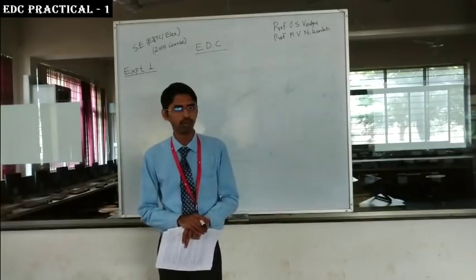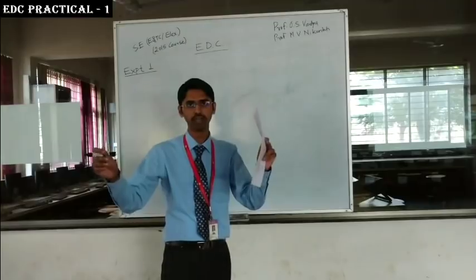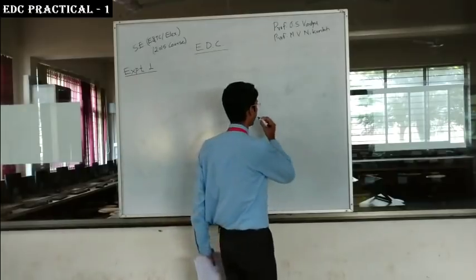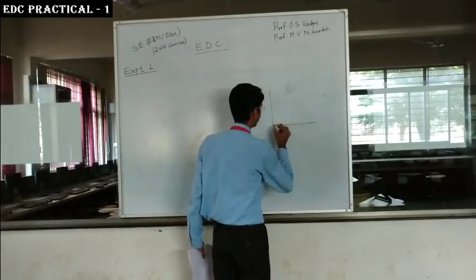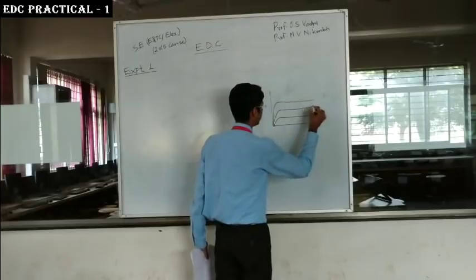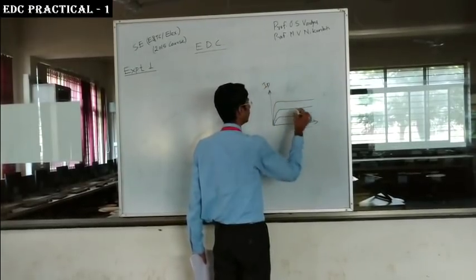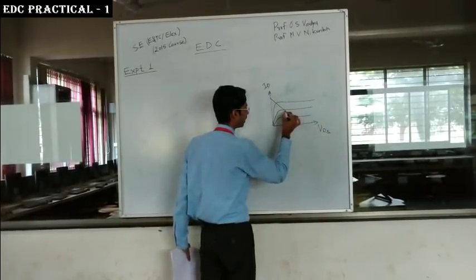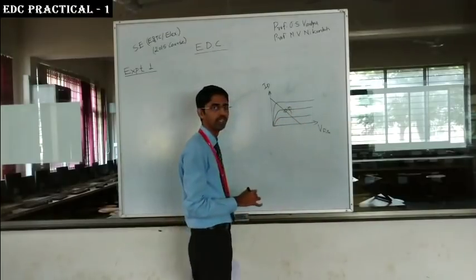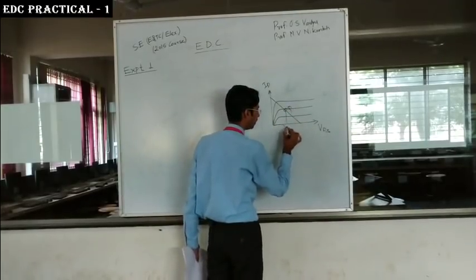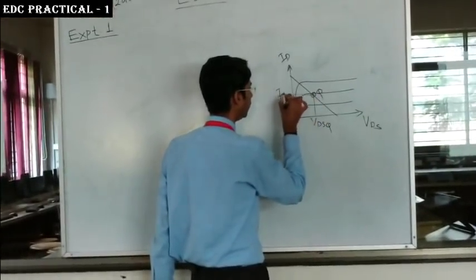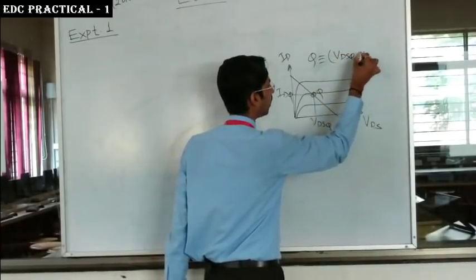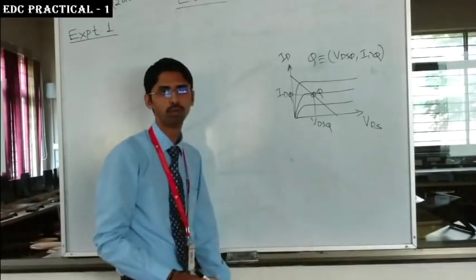First of all, what do you mean by DC Operating Point? If we draw the output characteristic of a FET, we can draw the DC load line. This is the output of ID versus VDS. When we draw the DC load line, at the center we have the Q point — that is called the DC Operating Point. It has coordinates VDSQ and IDQ. So Q is nothing but (VDSQ, IDQ).